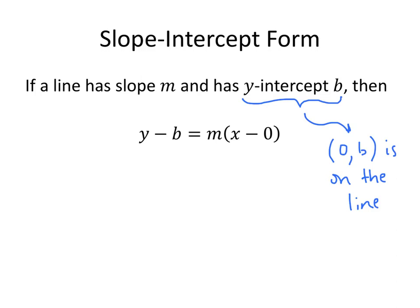And so if the point (0, b) is on the line, and the line has slope m, then we can simply plug that information into the point-slope form. Here's our slope m. Here's our x-coordinate of our given point, that's our x-naught. And then b is the y-coordinate of our given point, that's our y-naught.